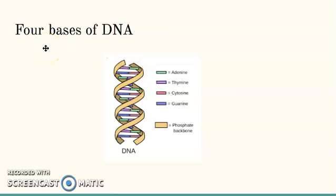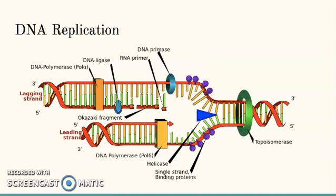Each strand has a 5' end and a 3' end. The two strands run in opposite directions. This determines how each strand of DNA is replicated.